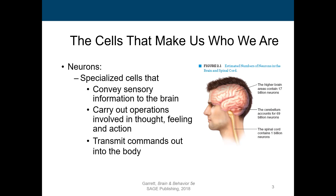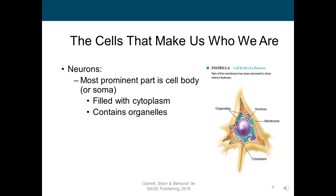We have about 17 billion neurons in our higher order brain areas, which we'll talk about in a little more detail. The cerebellum has about 69 billion neurons. The spinal cord contains about 1 billion neurons. Some neuroscientists estimate that there are more neurons in your brain than stars in our galaxy. So let's talk about the basic structure of a neuron.